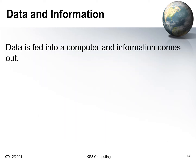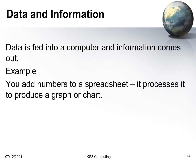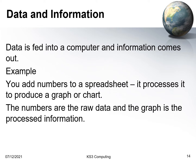With a computer, we feed data into it and information comes out. If you think about a spreadsheet, we take numbers and put them in. The numbers on their own might not mean much, but when we put them into the spreadsheet it can produce a graph or chart. That graph shows us lots of information — the numbers are the raw data going in, and the graph that comes out is the processed information.